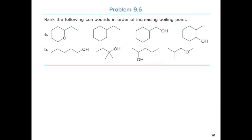Here's practice problem number six: rank the following compounds in order of increasing boiling point. We have four different compounds labeled A through D. Molecules C and D are both alcohols and are capable of hydrogen bonding, so C and D would have the highest boiling points compared to molecules A and B.